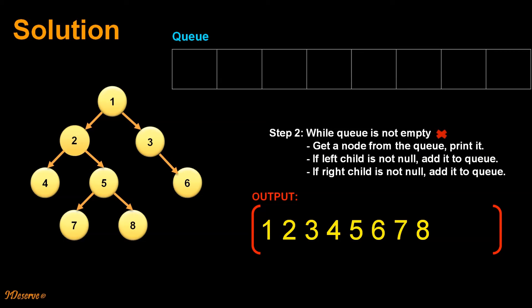Now queue is empty here. So our execution stops here and the final output is 1, 2, 3, 4, 5, 6, 7, 8 which is level order traversal of the tree.